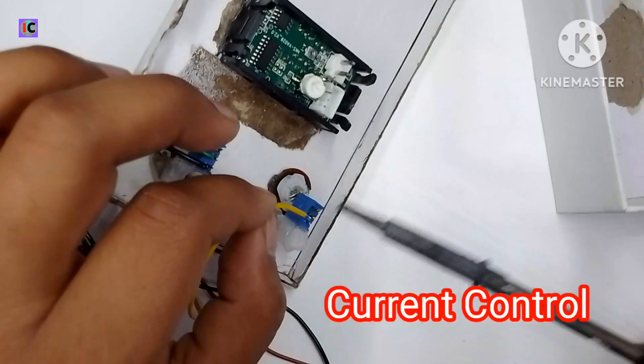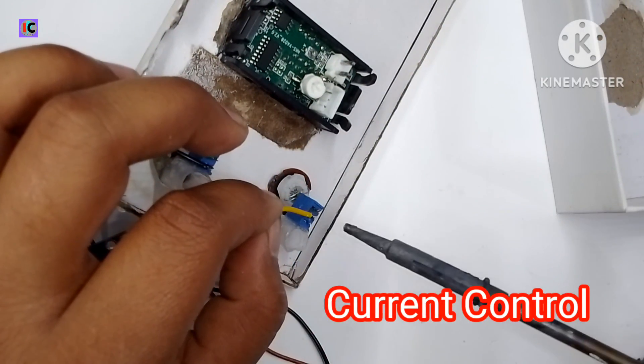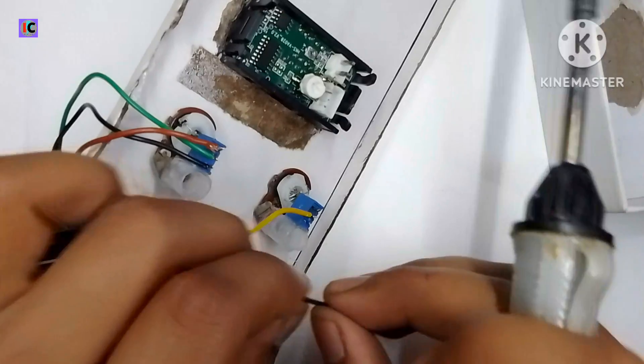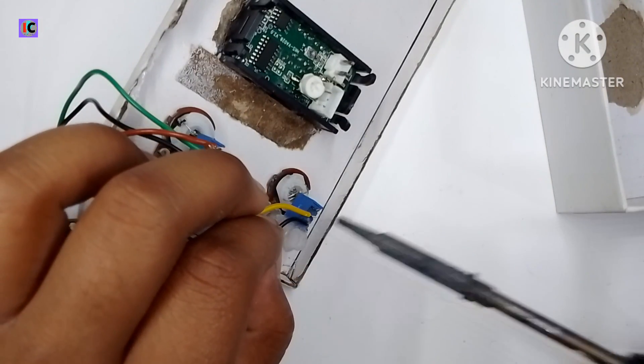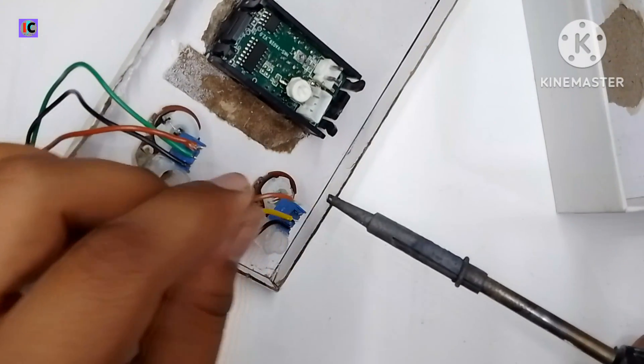And now this is the current controlling potentiometer which can be used for adjusting the output current as well as the voltage.